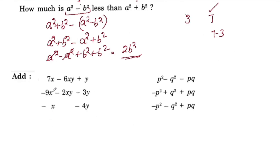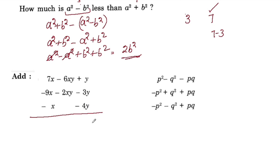Now we are going to add: 7x - 6y + y, negative 9x - 2xy - 3y, and minus x - 4y. We add these three expressions together.